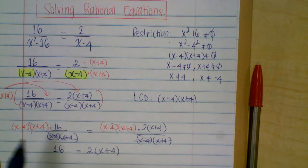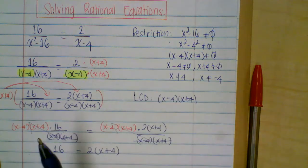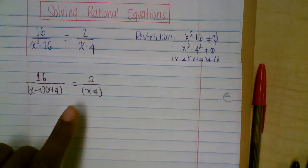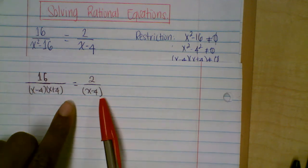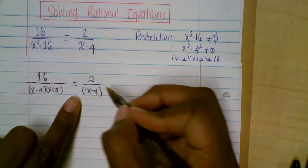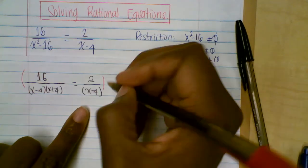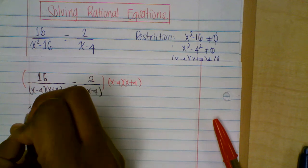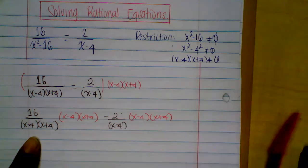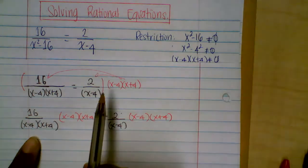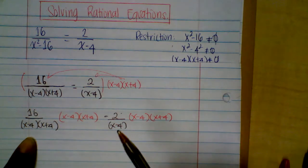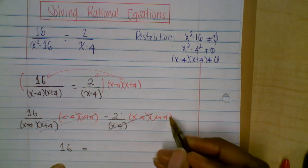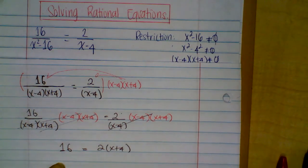In my previous video, I explained that you could skip those two steps by using the original factored form in the denominator. What you do is multiply each term by the LCD right away. The LCD is x minus four times x plus four. After distributing the LCD to each rational expression and simplifying, x minus four cancels and you're left with 16 equal to two times x plus four — which matches what we had before.